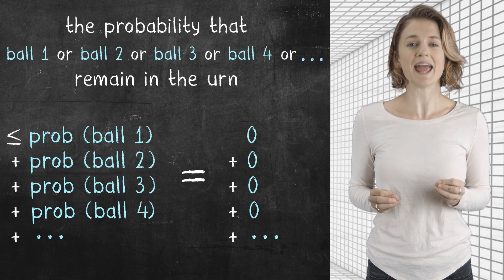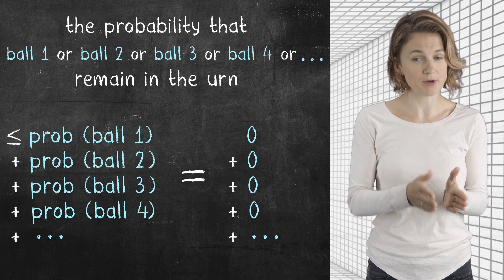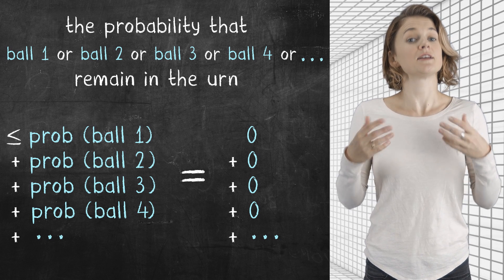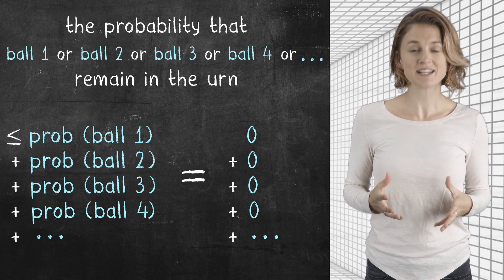The probability that any one of the balls, ball one, or ball two, or ball three, or ball four, and so on, remain in the urn at noon, is zero. In other words, with 100% probability, all of the balls have been removed at noon. Technically, it's possible to have balls remaining in the urn, but the likelihood is so small that it has zero probability.